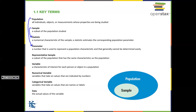When we take a sample, it needs to represent the population — that's where representative sample comes in. A representative sample means the sample shares all the same characteristics as the population, with no sampling bias. For example, if you wanted to know about the political stance of the United States and you only surveyed people from Texas, that would not be a representative sample, because several other states may not align exactly with Texas politically. You would want to sample from every state instead.